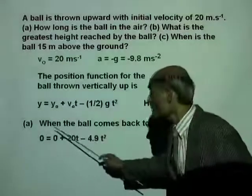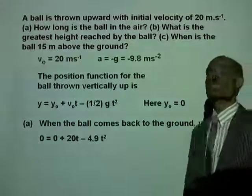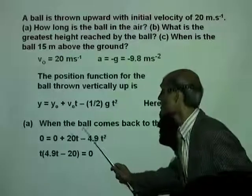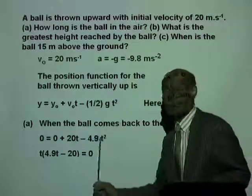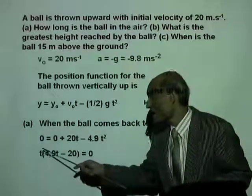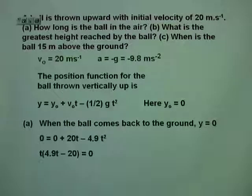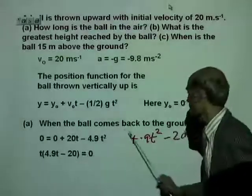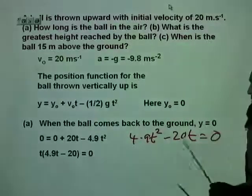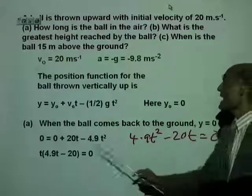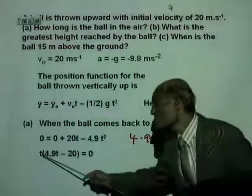So we have: 0 equals 0 plus 20T minus 4.9T squared. You can now solve this equation. Or: 20T minus 4.9T squared equals zero. Moving all terms to the left: 4.9T squared minus 20T equals zero. Factoring out T gives: T times (4.9T minus 20) equals zero. Now set each factor to zero.